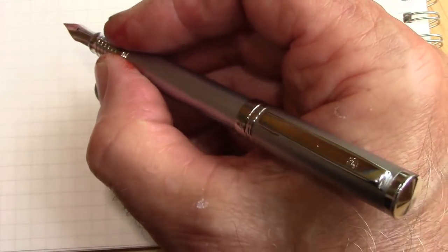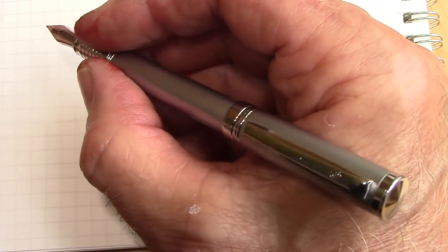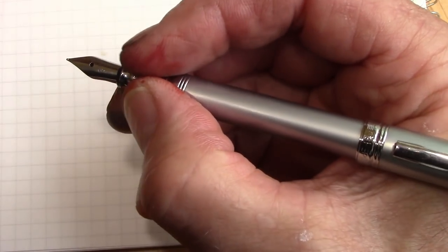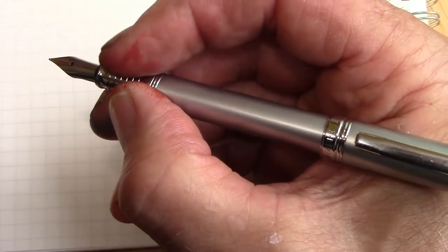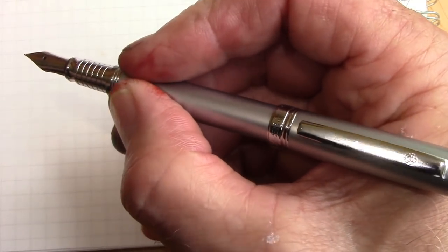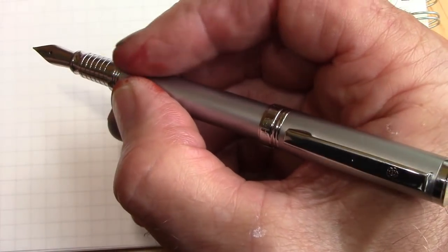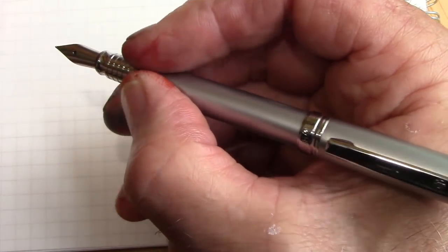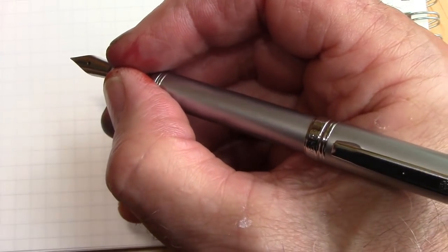It feels fine in the hand from a weight wise and balance perspective, in fact it's very good, but this small chrome section even though it has those ribs in it is slippery. Now you can hold it up here and this is a much better surface to hold. It feels more like what you're used to in a plastic grip but if you hold it down here be prepared it's going to slide around.